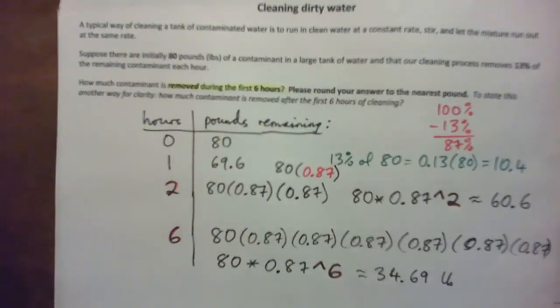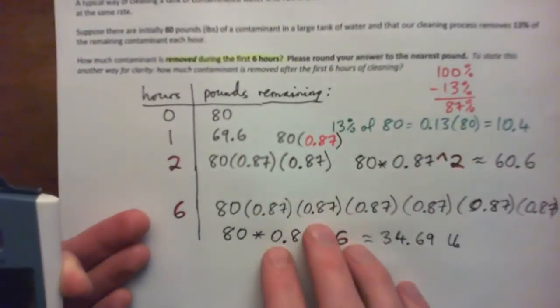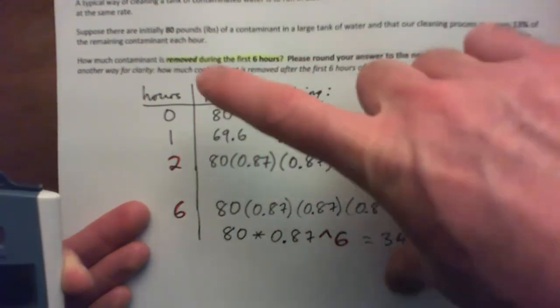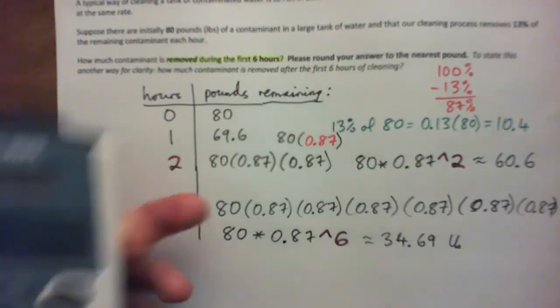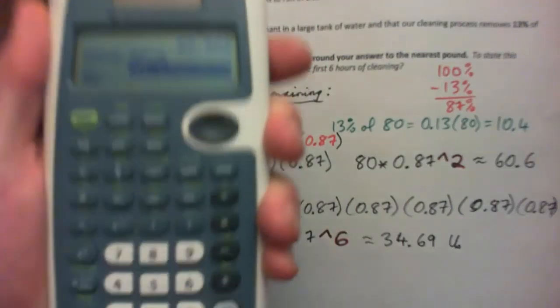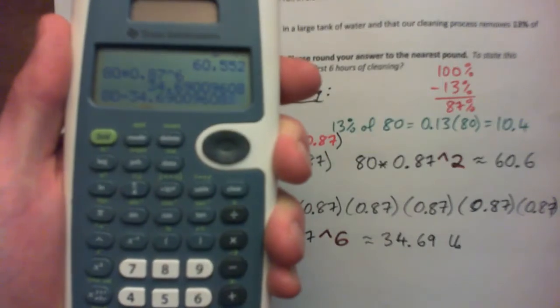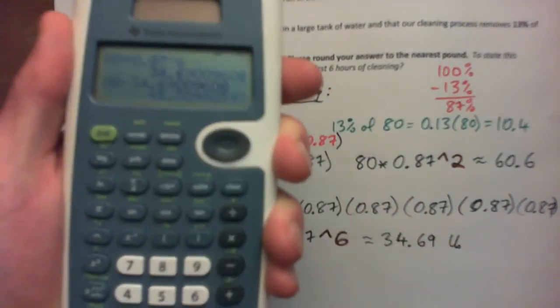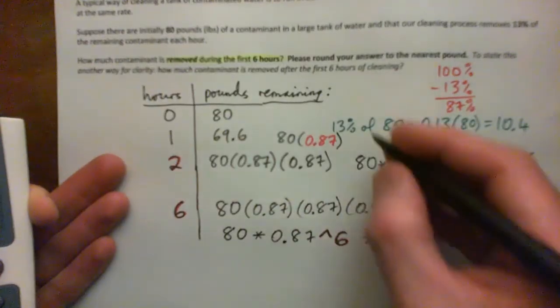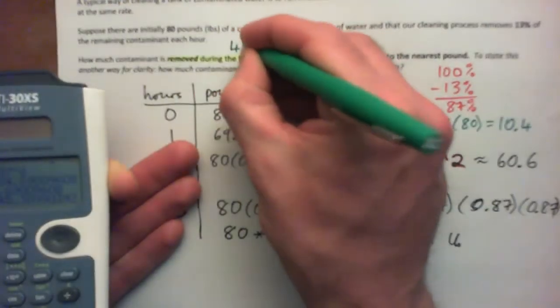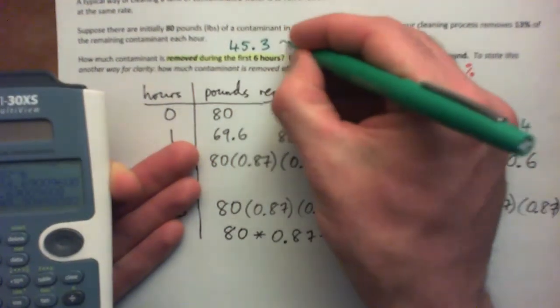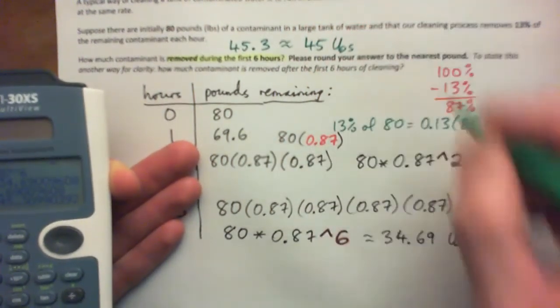So what we need to do is, we started with 80 pounds, and we had this much remaining. So how much was removed from zero hours to six hours? We go 80 subtract the 34. I've typed in 80, and I've moved my arrow key up. Now it's 80 minus that, and I press enter. That's 45.3099. So removed during the first six hours, I'm getting 45.3. It says round your answer to the nearest pound. So approximately 45 pounds. And there's our answer.